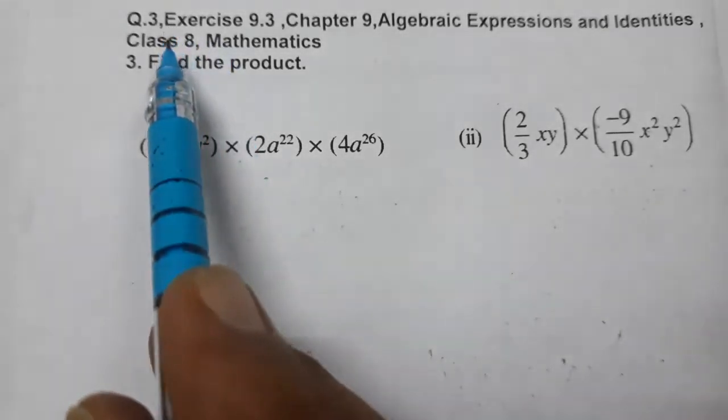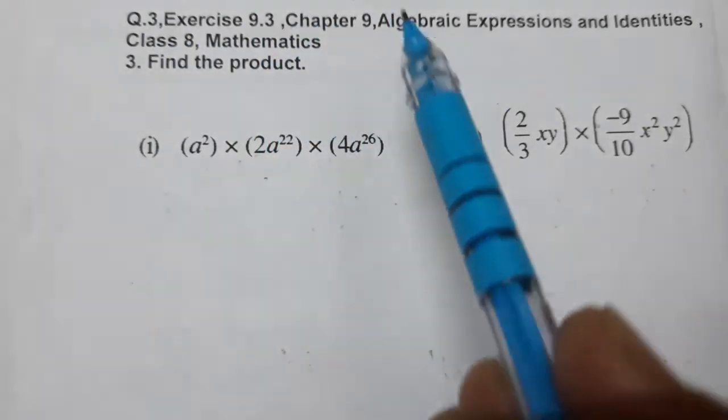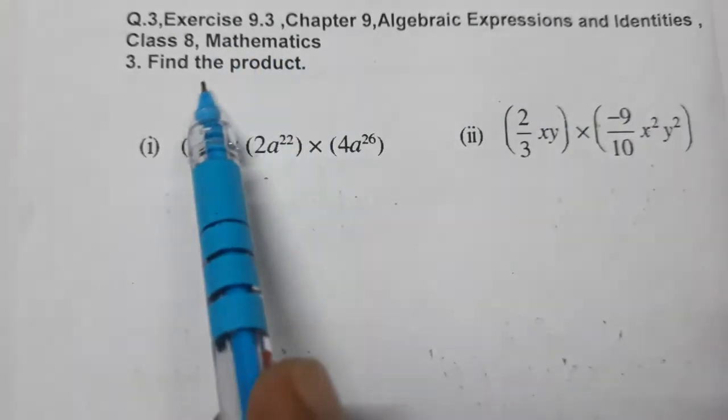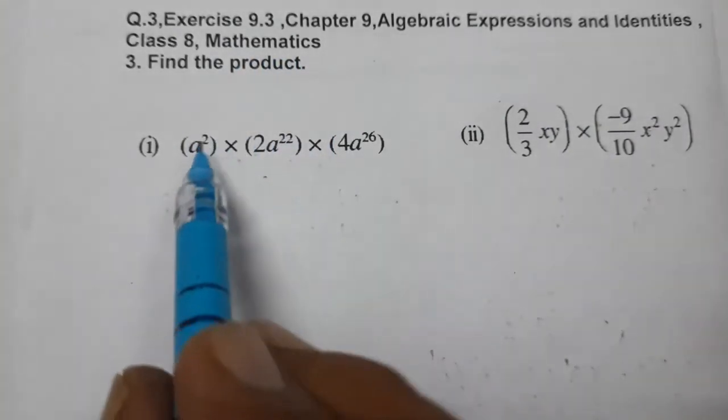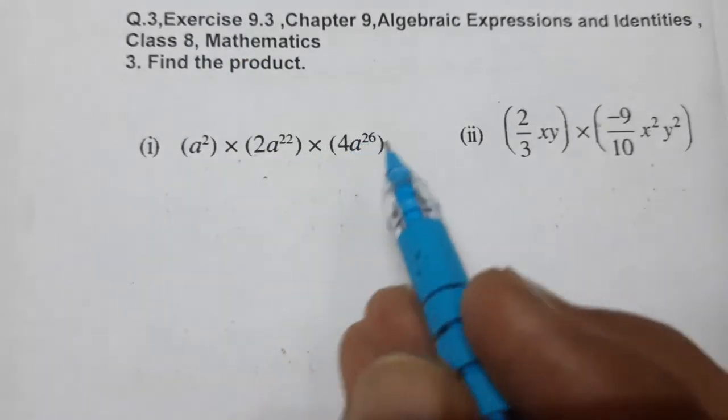Hello students, today we are going to do question number 3 of Exercise 9.3, Chapter 9, Algebraic Expressions and Identities, Class 8 Mathematics. Find the product. Let's find out the product. First of all, multiply all numbers with numbers.